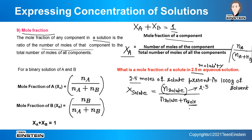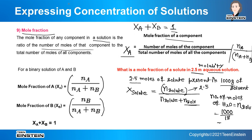The number of moles of water = mass / molecular weight = 1000 / 18 = 55.56 moles. Now substituting: x_solute = 2.5 / (2.5 + 55.56) = 2.5 / 58.06 = 0.043. If we want the mole fraction of the solvent, it would be 55.56 divided by the same denominator.